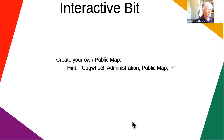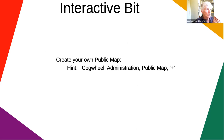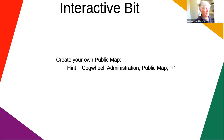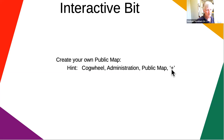Now it's the participants' turn. Assuming they've got Parish Online on their machines, they're invited to go through the public map creation step by step. The presenter will stop sharing the screen. The hint for getting started: click on the cogwheel in the top right corner, select administration from the mini menu, go into public maps, and then press plus for a new one.